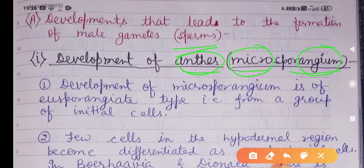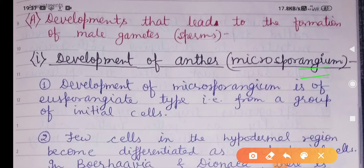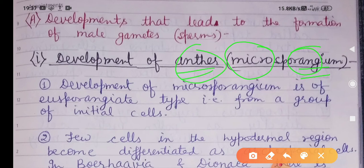Clear the concept — these terms are very interesting and very confusing, so clear the concept of this terminology. Angium means a bag or sac-like structure. Micro is used for pollen grains. That means microsporangium is the place where pollen grains are found, and is regarded as the anther in case of angiospermic plants.